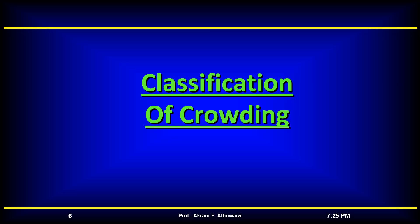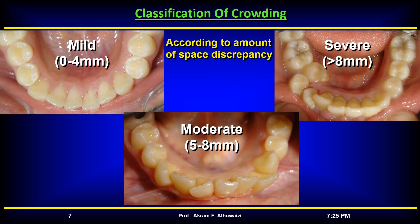Considering the amount of crowding, crowding can be classified as mild when there is 0 to 4 millimeters of need, moderate when there is 5 to 8 millimeters of need, and severe where there is more than 8 millimeters of crowding.